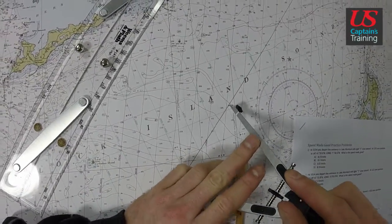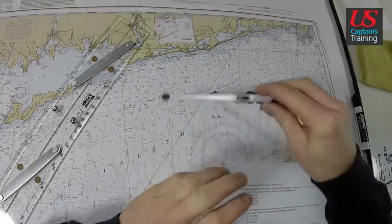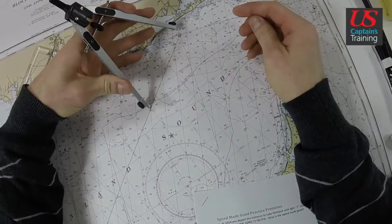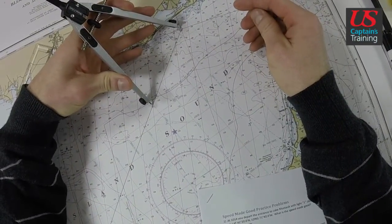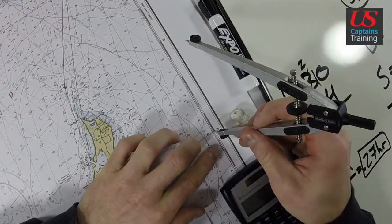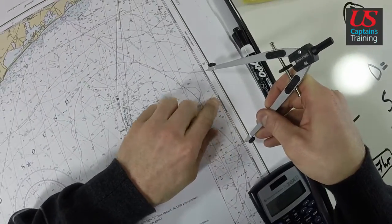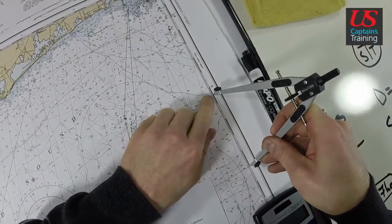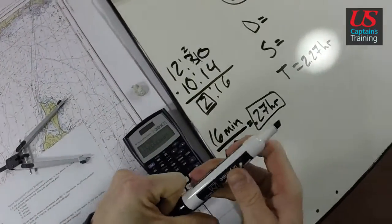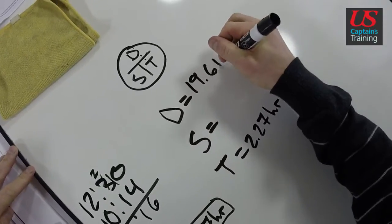So five, five, ten, fifteen. Fifteen plus, just scoot it down here, so we have fifteen plus this distance, which is fifteen, sixteen, seventeen, eighteen, 19.6. Our distance from start to finish is 19.6 nautical miles.